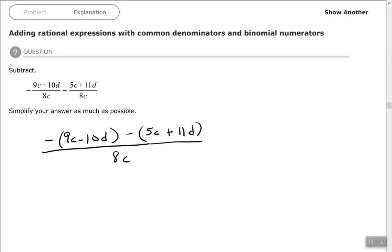So we have negative 9c minus 10d minus 5c plus 11d all over 8c. So it's great that we have the common denominator. In the next video or two we'll be finding a common denominator and then adding or subtracting.